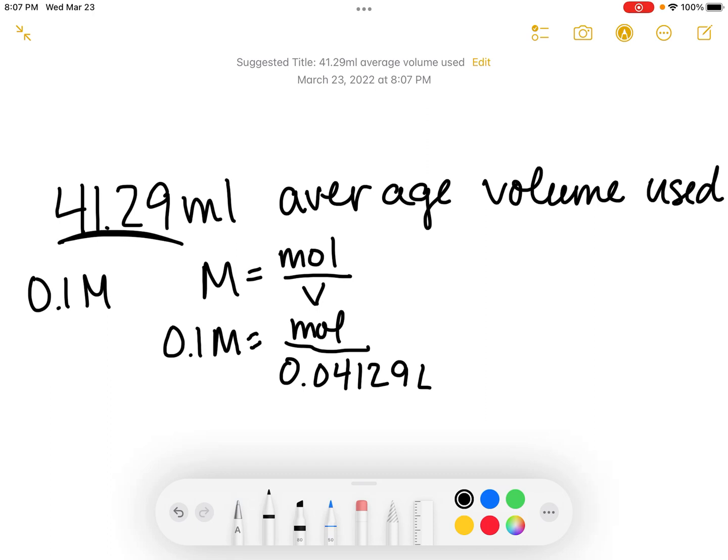I'm going to do 0.1 times 0.04129, and that gives me 0.004129 moles of sodium hydroxide.